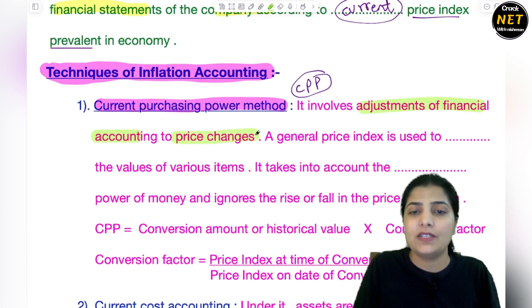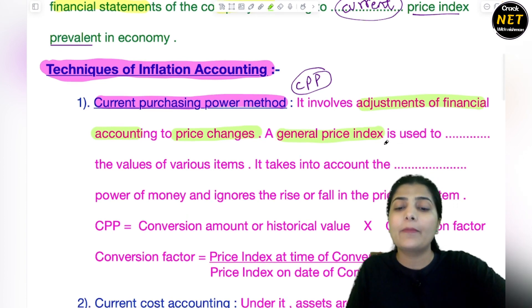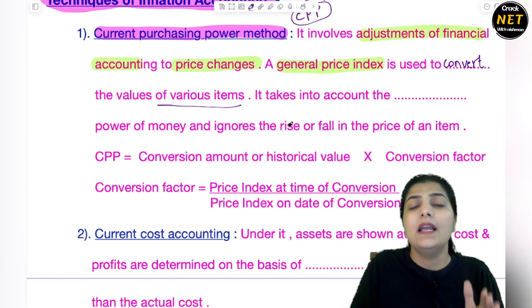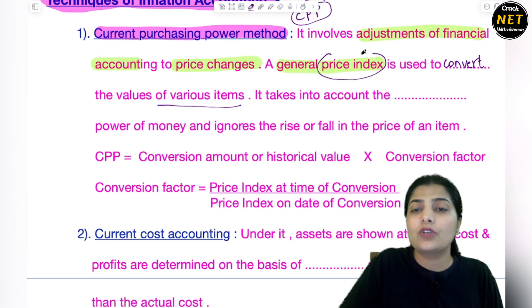So what does it say? It involves the adjustments of financial accounting - adjustment has to be done here also - to price changes. A general price index is used. Here you have to form a price index that is used to convert the values. The general price index you use to convert the values of various items - different items like land, building, raw material, any asset in your company - you use one price index for them.